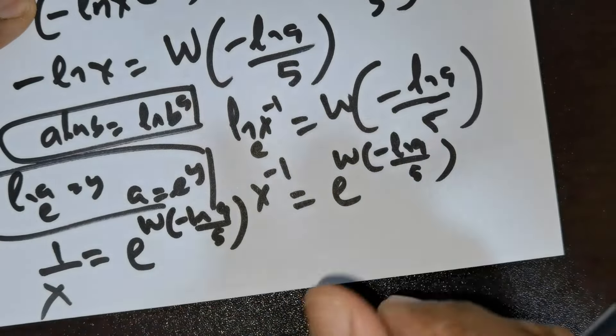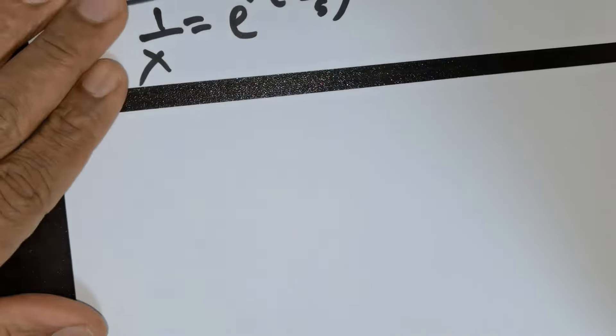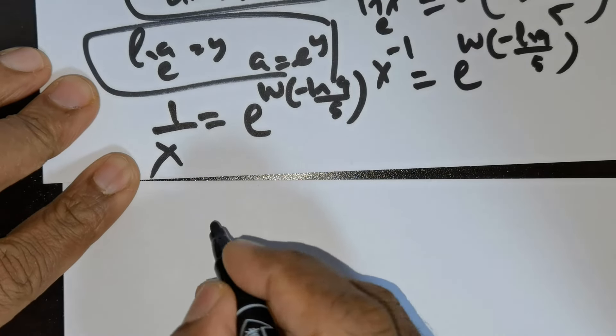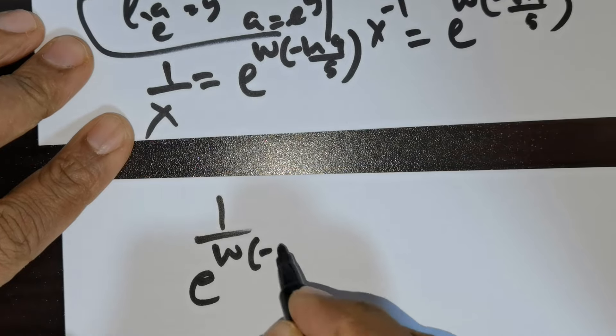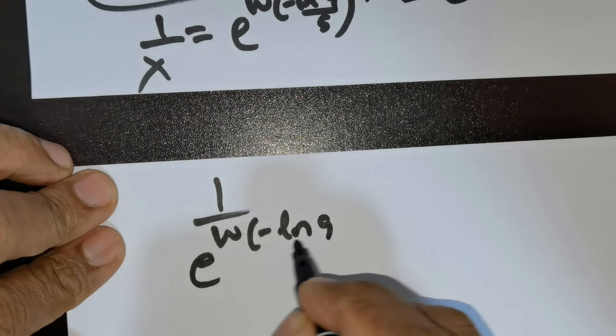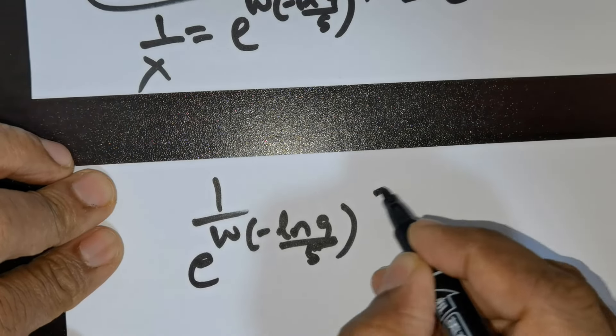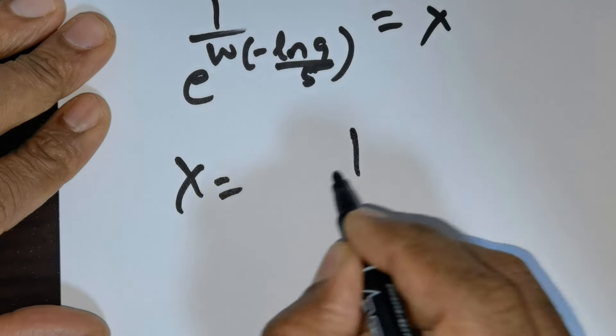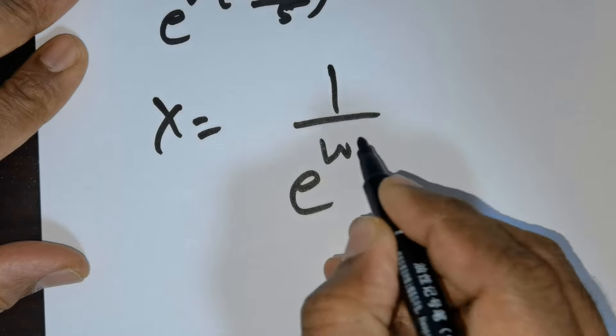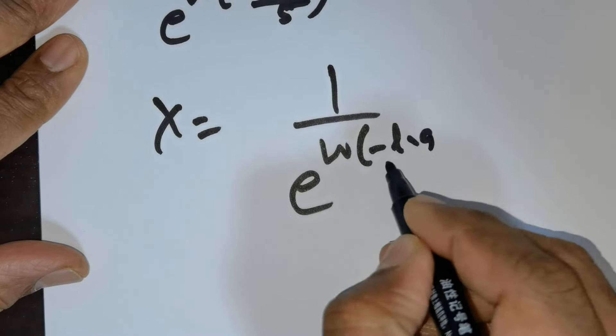Now flip it. If you flip it, you will get the following: 1 over e raised to the power of W of negative ln 9 divided by 5 is equal to x. So x is equal to 1 over e raised to the power of W of negative ln 9 divided by 5.